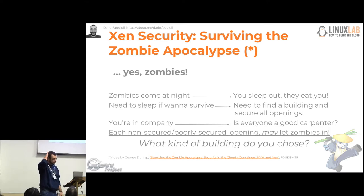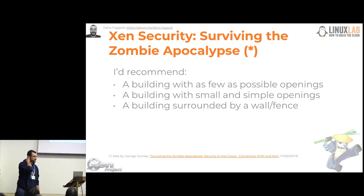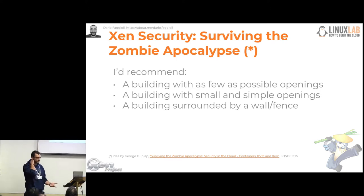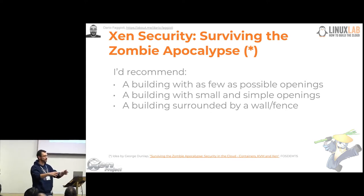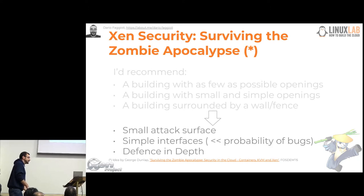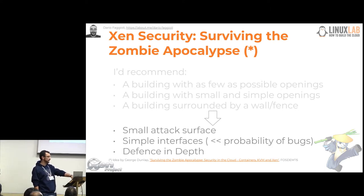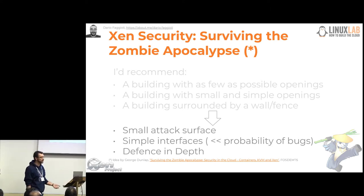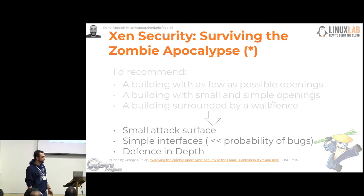Some recommendations: a building with as few openings as possible; a building where the few openings it has are small and simple; and if possible, a building surrounded by a wall or fence which can itself be secured. As I said, we are not really talking about zombies — we are talking about security. These concepts map to security concepts: we want for a system to be secure, we want a small attack surface, we want simple interfaces because they're less likely to contain bugs, and we want to apply the concept of defense in depth — having more layers of security.